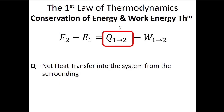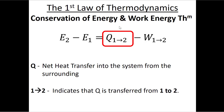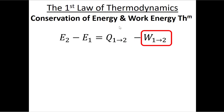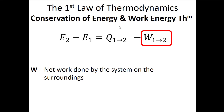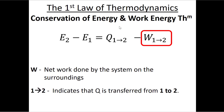Capital Q is heat transfer into the system from the surroundings. This tells us that heat into the system is positive, because Q equals heat transfer into the system. The subscript indicates we're looking at heat transferred as we move from state one to state two — you can't have heat transfer at any particular instant; that would be a heat transfer rate. Here we're looking at total heat transferred between states one and two. Finally, W is the net work done by the system on the surroundings, with the subscript indicating the move from state one to state two.